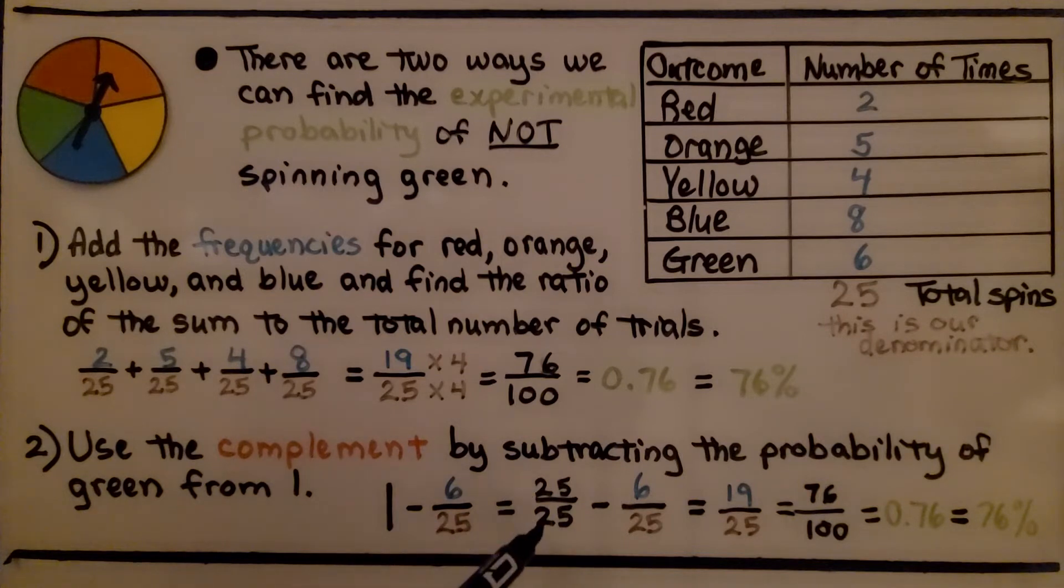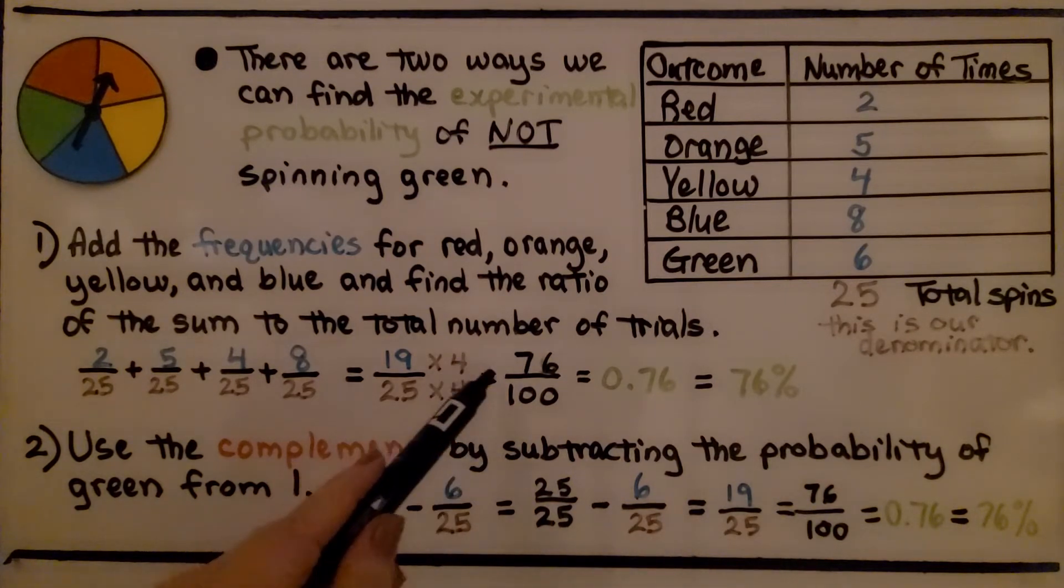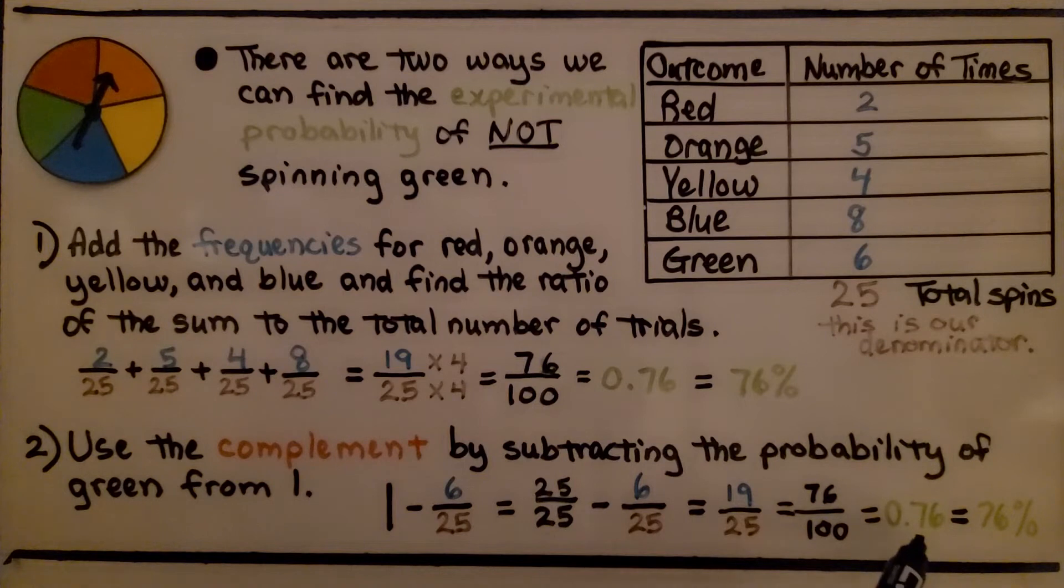So we have one minus this six twenty-fifths. We can write the one as twenty-five twenty-fifths and subtract six twenty-fifths and get nineteen twenty-fifths, which gives us seventy-six hundredths, just like we did here, which is seventy-six percent.